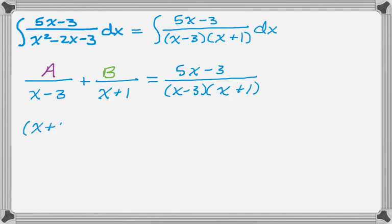What I'll do is clear the denominator. If you look at it and think, like if x equaled negative 1, then A would disappear. Or if x equaled 3, then B would disappear, and that's exactly what I'm going to do.